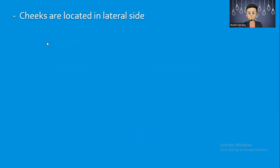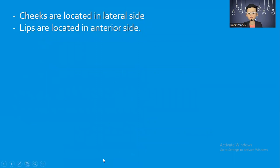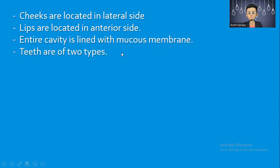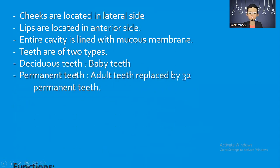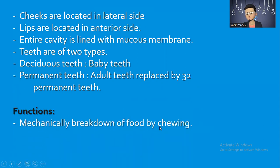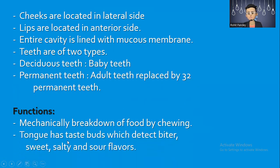The cheeks are located on the lateral side, and the lips are located on the anterior side. The entire cavity is lined with the mucous membrane. Teeth are of two types: deciduous teeth, meaning baby teeth, and permanent teeth — the baby teeth are replaced by 32 permanent teeth. The function of teeth is the mechanical breakdown of food by chewing.